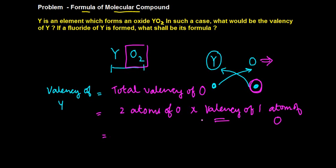If you have the valency table with you, you will notice that it is two times two is equal to four, right? So the valency of Y in this case is going to be equal to four, right?